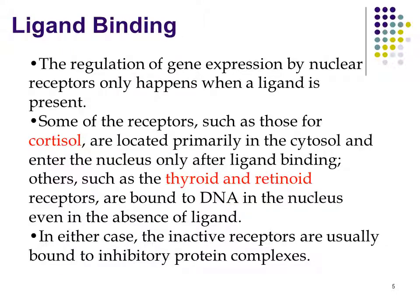The regulation of gene expression by nuclear receptors only happens when a ligand is present. Some of the receptors, such as those for cortisol, are located primarily in the cytosol and enter the nucleus only after ligand binding. Others, such as the thyroid and retinoid receptors, are bound to DNA in the nucleus even in the absence of a ligand. In either case, the inactive receptors are usually bound to inhibitory protein complexes.